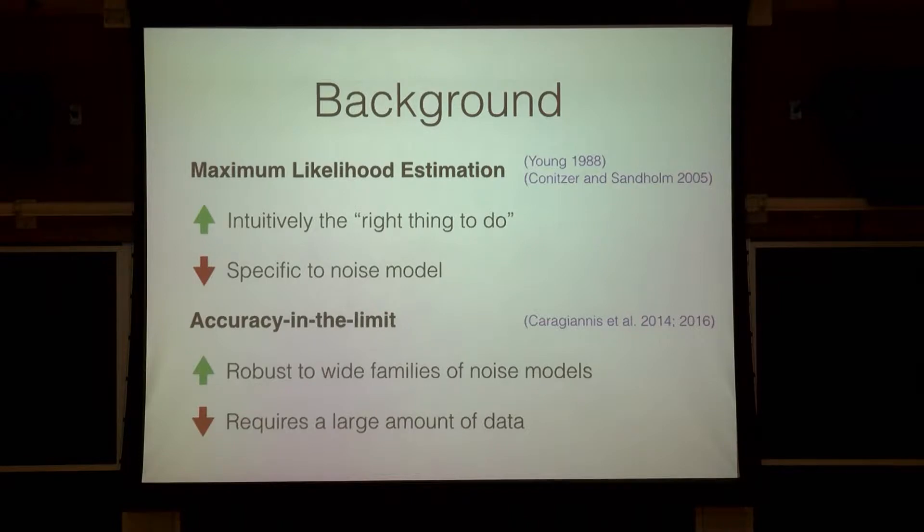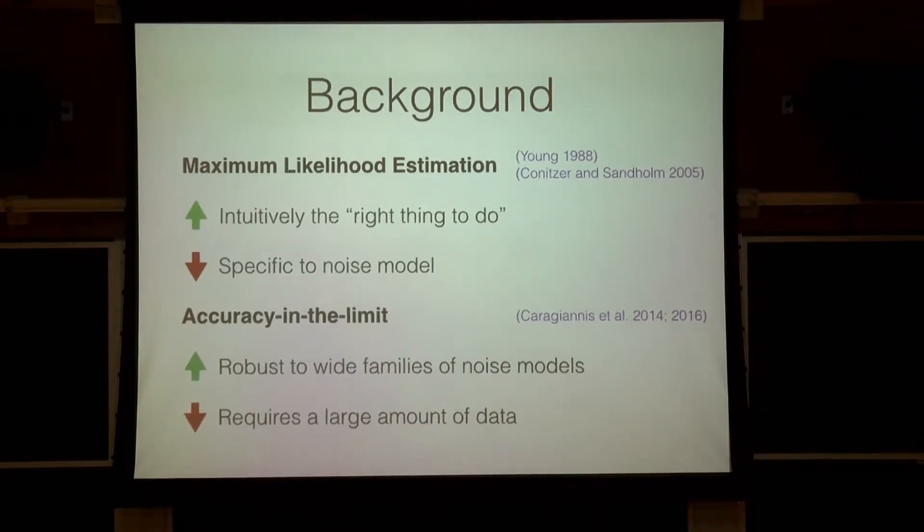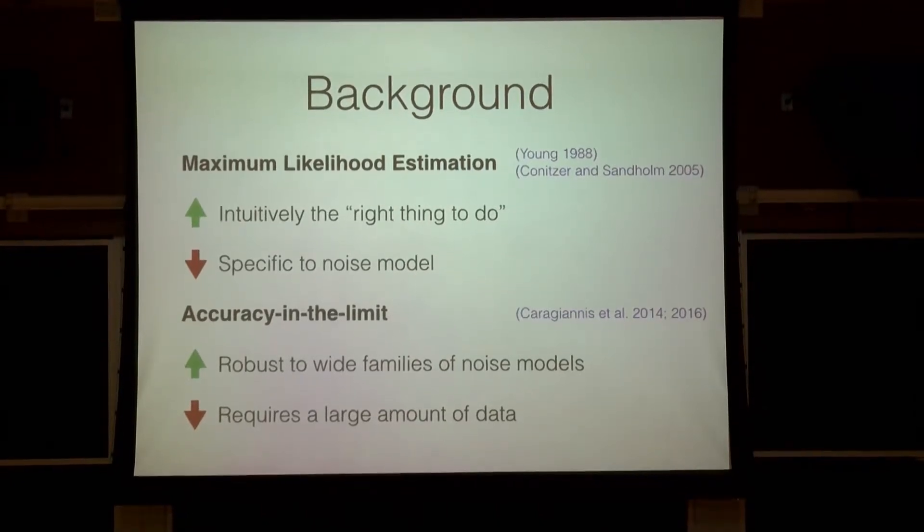The second thing people did, starting in 2014, is called Accuracy in the Limit. And this says, essentially, you can take a family of noise models instead of one specific noise model, but you might need a potentially infinite amount of data. And on RoboVote, you have maybe 10 to 15 votes at maximum per instance. So this is not very applicable in practice.